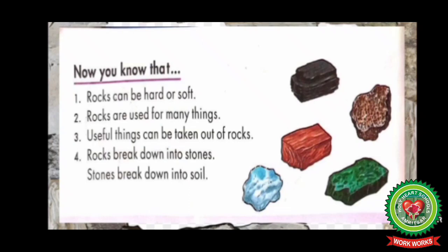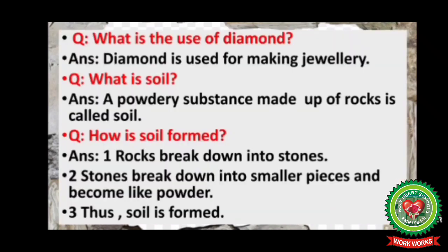After discussing rocks and minerals, we now know that rocks can be hard or soft. Rocks are used for many useful things. Useful things can be taken out of rocks. Rocks break down into stones, which break down into smaller pieces and become like powder — this is how soil is formed.